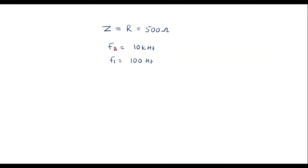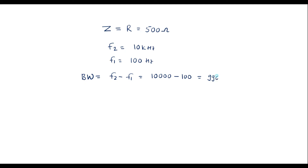With the help of F2 and F1, first I will calculate the bandwidth. We know that bandwidth is equal to F2 minus F1. That is, 10,000 minus 100, which gives 9,900 hertz. So bandwidth is 9,900 hertz.